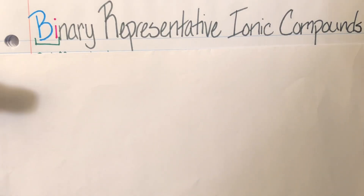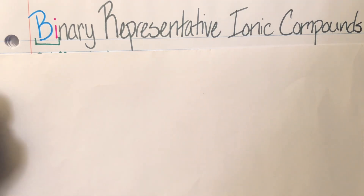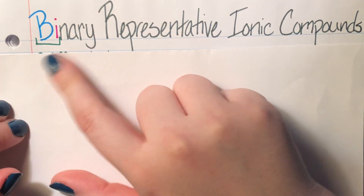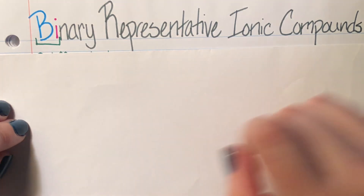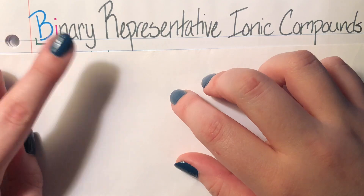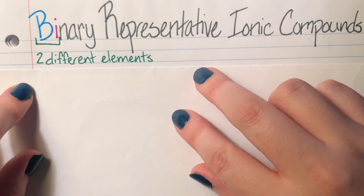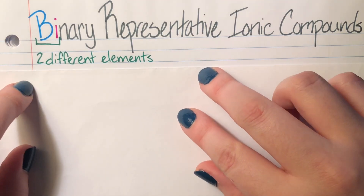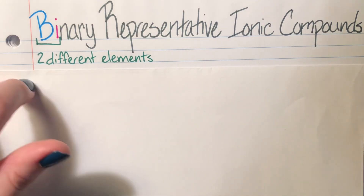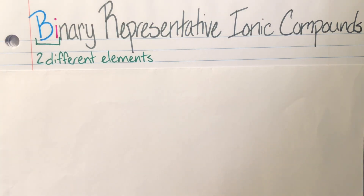Today we're going to talk about binary representative ionic compounds. We need to decode what this means. First, 'binary' — just like you already know, 'bi' means two. So binary ionic compounds are going to be ionic compounds that have two different elements coming together.